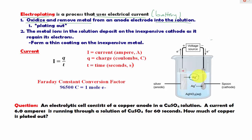So you have a bunch of silver ions floating in the solution. The metal ions in the solution will eventually regain their electrons by depositing on the inexpensive cathode, or just the cathode itself.